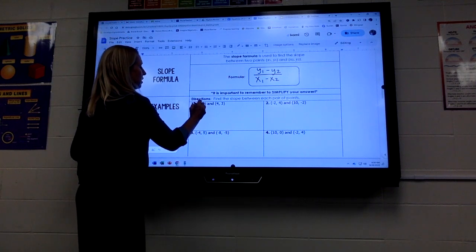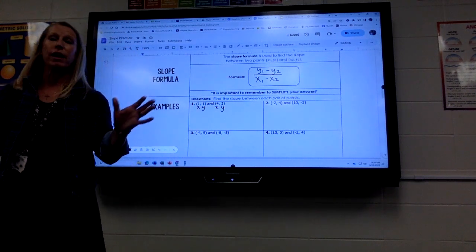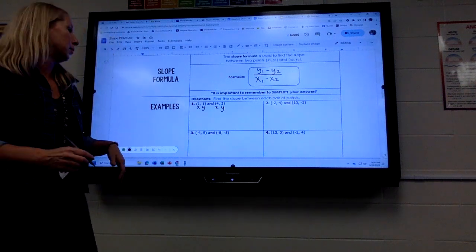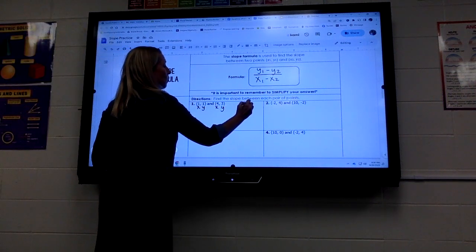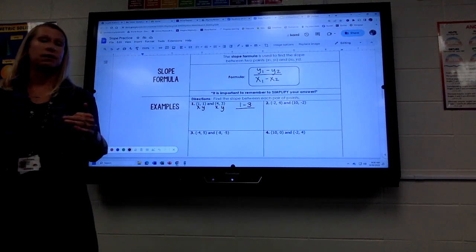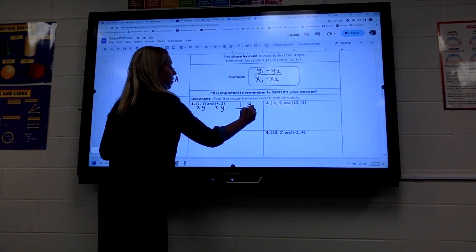So remember your points are x, y, x, y. We have to subtract the y's on top, so my y numbers are 1 and 3, and we subtract the x's on bottom. So my x numbers are 1 and 4.